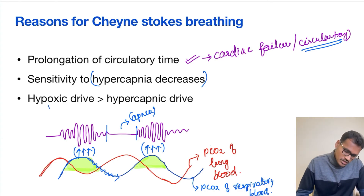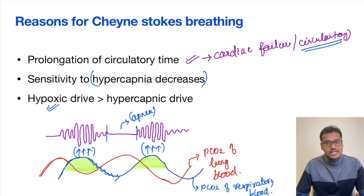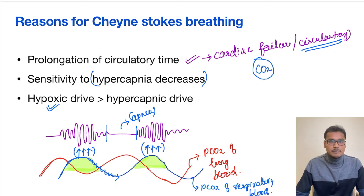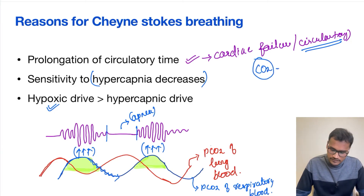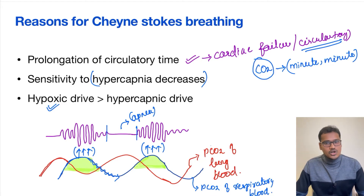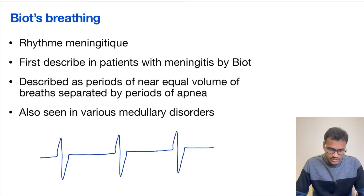It is also said that the sensitivity of the central neurons for hypercapnia is reduced — meaning the hypoxic drive is playing a greater role than the hypercapnic drive. But in normal subjects, CO2 is the major influencer and can control minute-to-minute changes, altering respiration in a short span of time compared to the hypoxic drive.